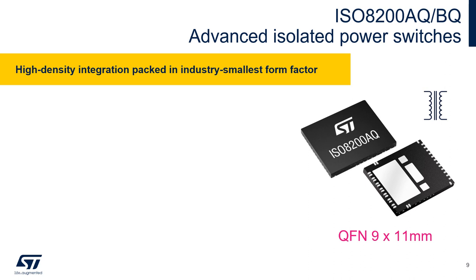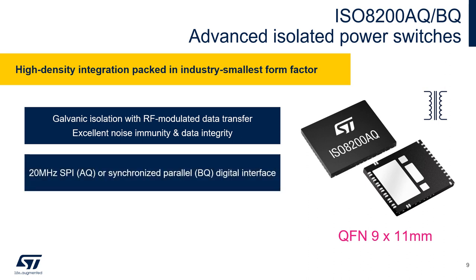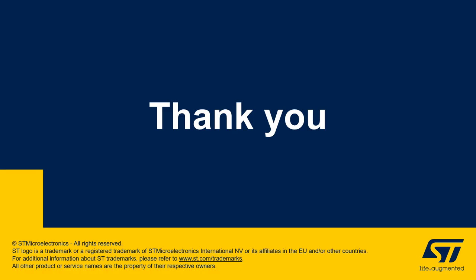Let's recap the key strengths of the ISO 8200. These devices integrate leading-edge galvanic isolation technology in a small form factor, which allows achieving high data integrity at very interesting costs. Two options of this IC are available: the AQ with SPI and the BQ with parallel interface. Both products offer a high level of protection and diagnostics. Thanks for your attention.